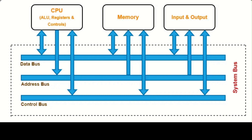To wrap up our discussion on the uses of buses in Von Neumann architecture: it's clear that buses play a critical role in modern computer systems by providing a pathway for communication between different components. Specifically, the data bus allows for the transfer of data between CPU and memory, while the address bus is used to specify the location of data in memory. In addition, the control bus carries signals that control the flow of data and the behavior of the system as a whole. All three types of buses work together seamlessly to enable the Von Neumann architecture, which is a fundamental model for modern computer systems.